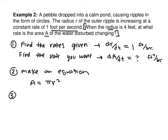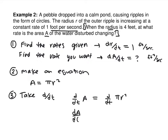Step three: take d/dt of both sides. The derivative of A is just dA/dt. The derivative of pi R squared is 2 pi R dr/dt — because again, in the last problem we had to add dx/dt and dy/dt; same thing, they're just A's and R's instead of Y's and X's.